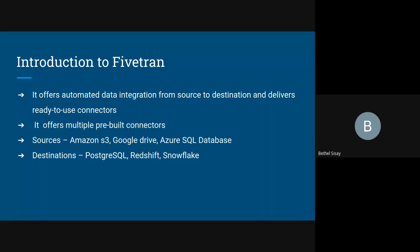Fivetran is a popular tool that offers automated data integration from the source to the destination. It delivers easy-to-use connectors that automatically adapt whenever your schemas or APIs change, ensuring consistent and reliable access to data. Fivetran offers multiple pre-built connectors to connect to source data — they are predefined, so no manual coding is involved. You simply add the connector to the pipeline, configure it with the data source, and Fivetran extracts the information and loads it to your target destination.